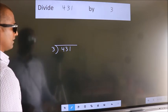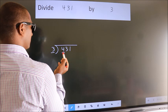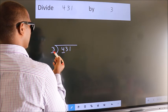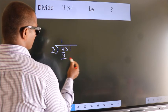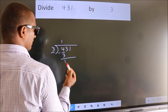Next, here we have 4, here 3. A number close to 4 in 3 table is 3 1s 3. Now, we should subtract. We get 1.